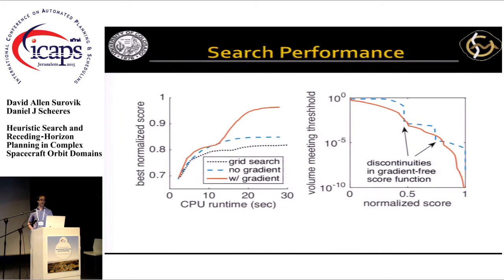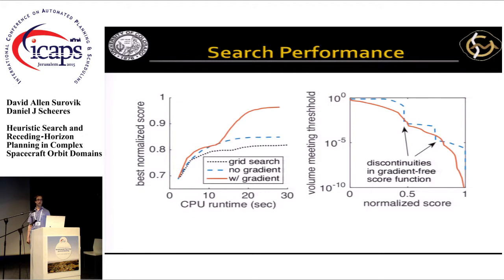The performance that comes out is pretty good. On the left, you see the change in the best score value identified via a few different search methods within the same runtime on my MacBook Pro. You get a much better score once you add in the heuristic with gradient augmentation. On the right, it shows you just how hard-fought that extra bit of score is because only a very small fraction of the total control domain volume maps to scores that are that high.